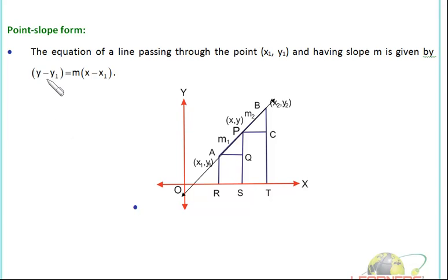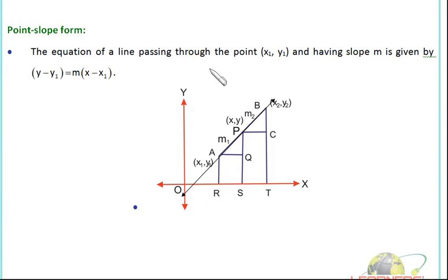The next important form is the point-slope form. The equation of a line passing through the point (X1, Y1) and having slope M. In this case, we know the line is passing through just one point (X1, Y1), so we don't know the value of X2, Y2. Our problem starts from (X1, Y1) only.